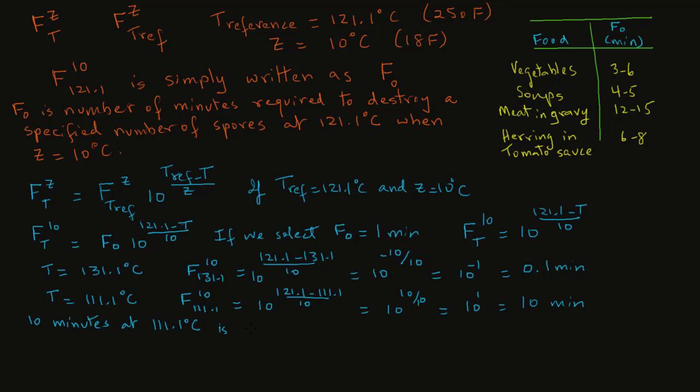This small computation tells us that 10 minutes at 111.1 degrees C are equivalent to 1 minute at 121.1 degrees C and 0.1 minute at 131.1 degrees C. So we can easily convert the F value to any other temperature using this expression if the F value for a reference temperature is known. Looking at these numbers, you can see that at higher temperatures like 131 degrees C, you require a shorter thermal death time, which is 0.1 minutes here, compared to when the temperature is lower, where we require 10 minutes at 111.1 degrees C. This illustrates how we can convert the values of thermal death time.